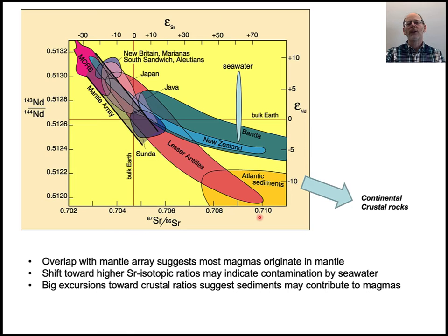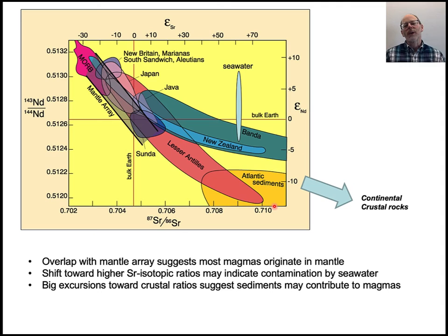If you mix it with sediments, it goes off in this other direction. When we look at arcs like Banda in the Western Pacific and the Lesser Antilles in the Atlantic, we see these mixing arrays going off towards contaminating materials — in this case seawater, and also sediments and crustal rocks. I'm not going to ask you questions about neodymium and strontium isotopes — just to give you the sense that there is this mixing process and we can track it using isotopes.